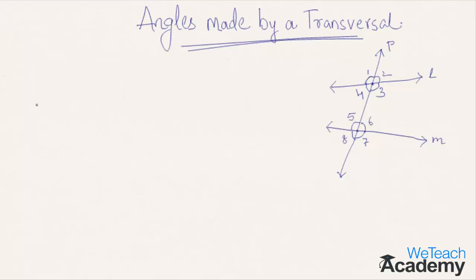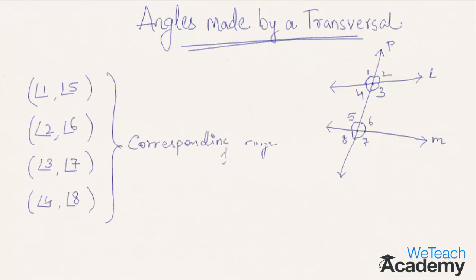These kinds of angles are called corresponding angles. In this diagram, angle 1 and angle 5, angle 2 and angle 6, angle 3 and angle 7, and angle 4 and angle 8 are pairs of corresponding angles. These are angles which are on different vertices but on the same side of the transversal.